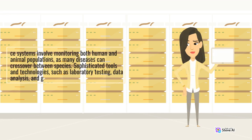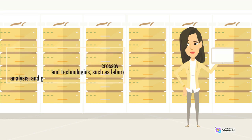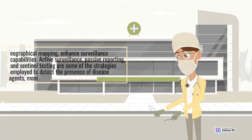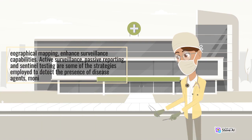Surveillance systems involve monitoring both human and animal populations, as many diseases can cross over between species. Sophisticated tools and technologies, such as laboratory testing, data analysis, and geographical mapping, enhance surveillance capabilities.